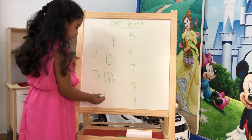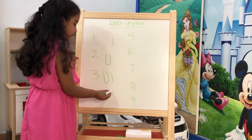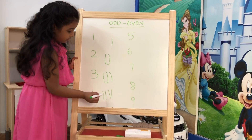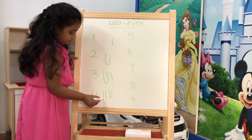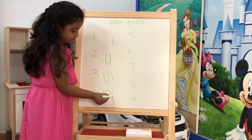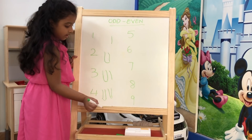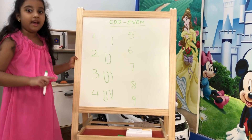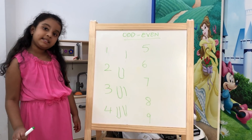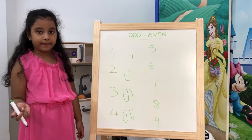One, two, three, four. It is even. Next number is five.